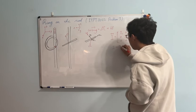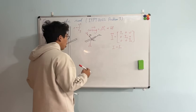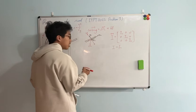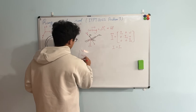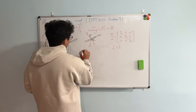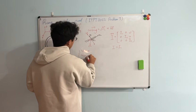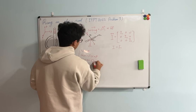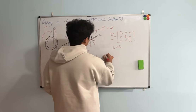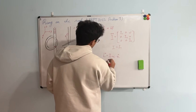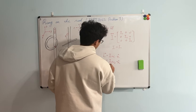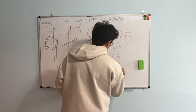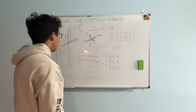In the inertia tensor, I1 equals I2. We decompose capital Ω onto the principal axes and obtain: the angular velocity on the first axis is zero; on the second axis it is −Ω sin θ; on the third axis it is ω − Ω cos θ. Thus the angular momentum of the ring is I1·ω1 on x1, plus I2·ω2 on x2, plus I3·ω3 on x3.